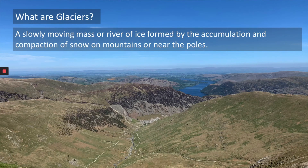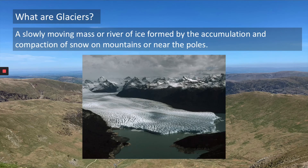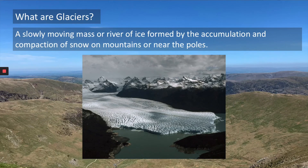So in terms of what a glacier actually looks like, we've got a picture here. We can see on this picture we're high up in the mountains and we can see that snowfall has fallen on the mountains and has been compacted to form a huge river of ice which is in the middle there, which is our glacier.